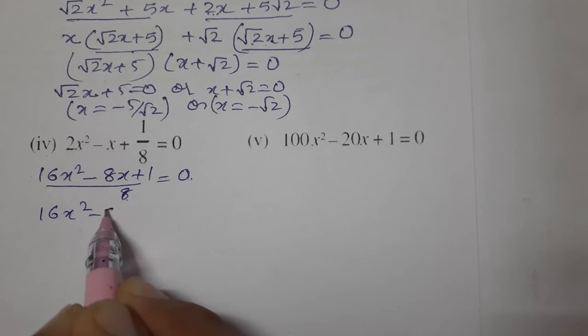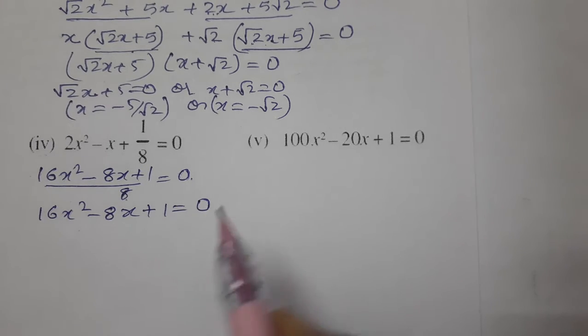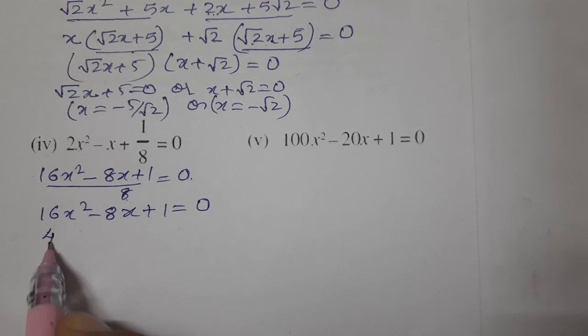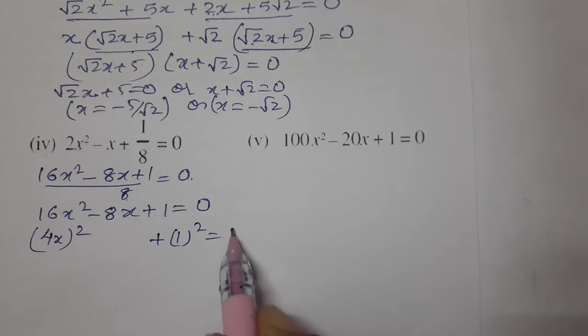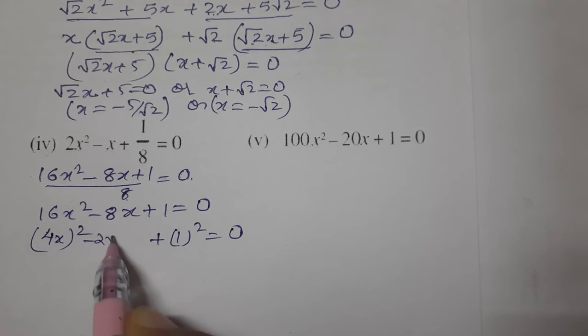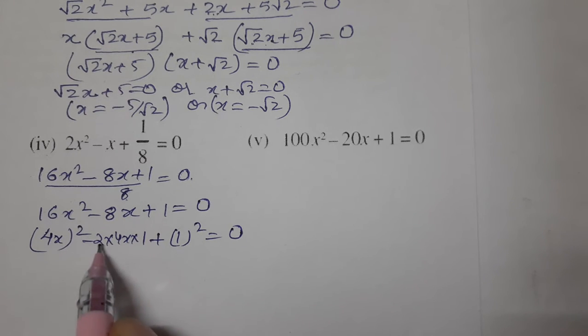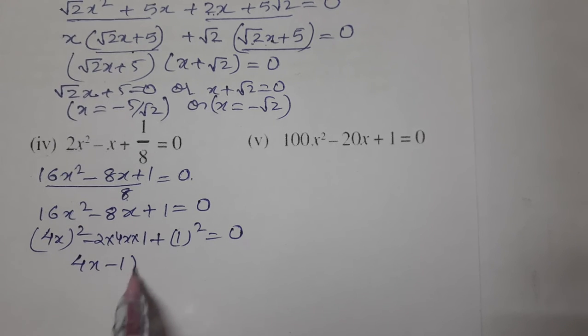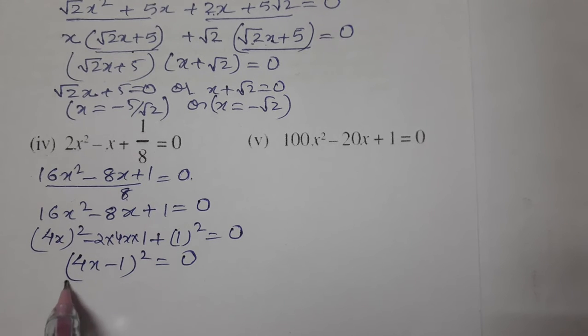Now we can do middle term split or apply an identity. This is a² - 2ab + b², which equals (a - b)². Here a = 4x and b = 1, so (4x - 1)². Square means we have to write it two times.